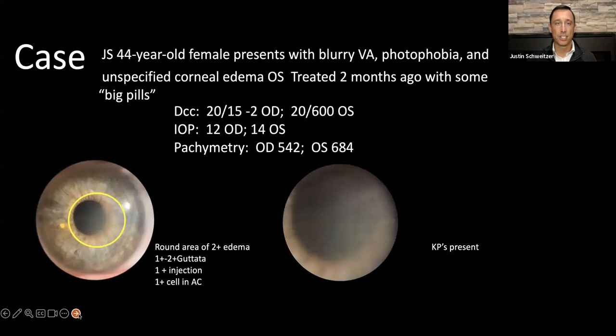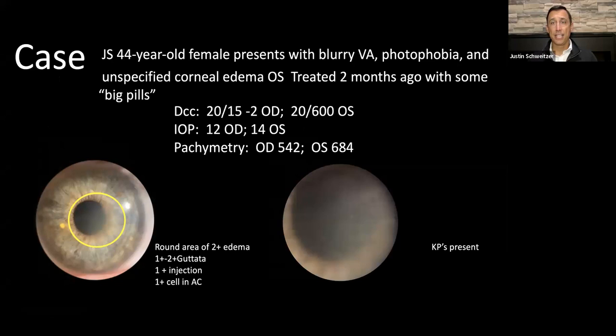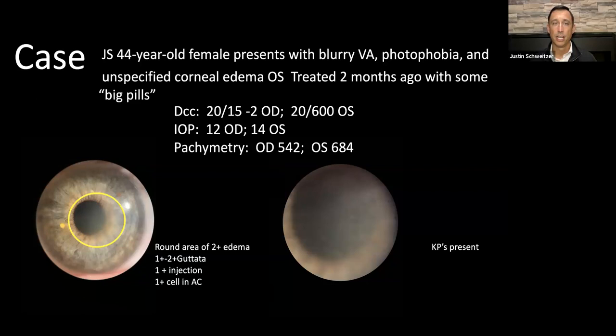Here's our first case: a 44-year-old patient referred to me after attempted treatment. She'd been having intermittent blurry vision and in her history mentioned she'd been treated with some big pills — a key clue. The note said she had corneal edema mainly affecting her left eye. Visual acuity was 20/15 in the right eye, about 20/60 in the left eye, intraocular pressure normal, and pachymetry showing a big difference between the two eyes.